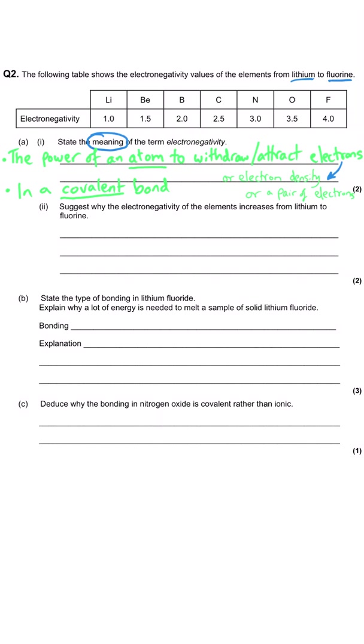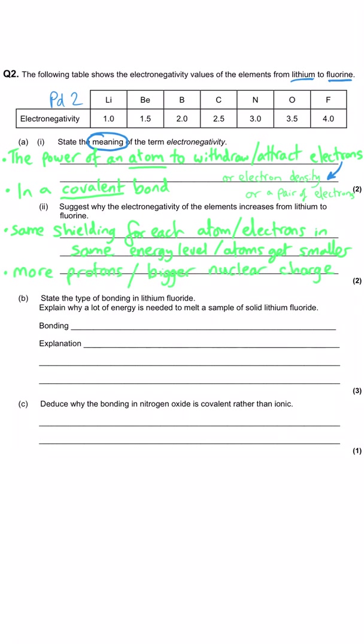The question moves on to ask why the elements increase in electronegativity from lithium to fluorine. You need to think about how those elements change as we go from lithium across to fluorine. They are all in period two, which means each atom has the same shielding in terms of the subshells, and the electrons are in the same energy level. But the atom gets smaller as you move across the period from lithium to fluorine. Any one of those three points gets us mark number one. Then we say that as we go across the period the atoms get more protons in their nucleus or a bigger nuclear charge, that's the second mark.